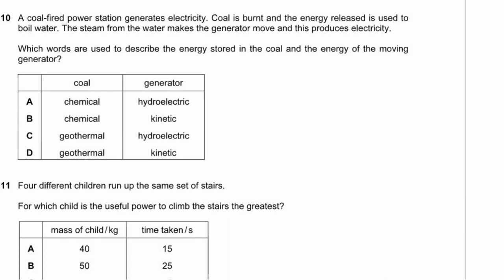Question 10. In a coal-fired power station, coal is burnt to boil water, producing steam that drives a generator. The energy stored in coal is chemical energy. The energy of the moving generator is kinetic energy — kinetic simply means movement. The answer is option B.